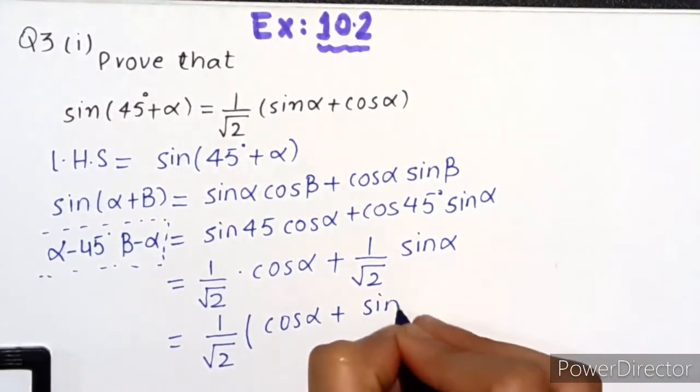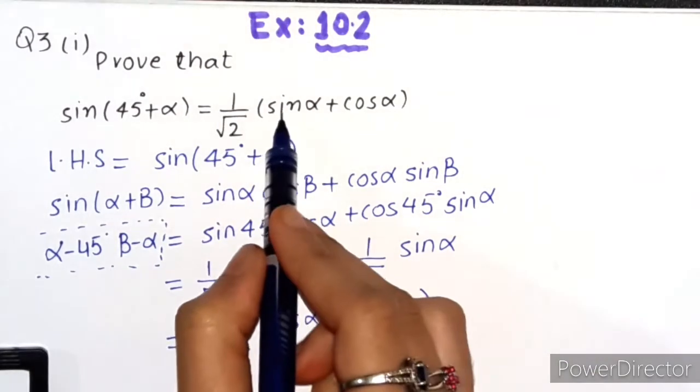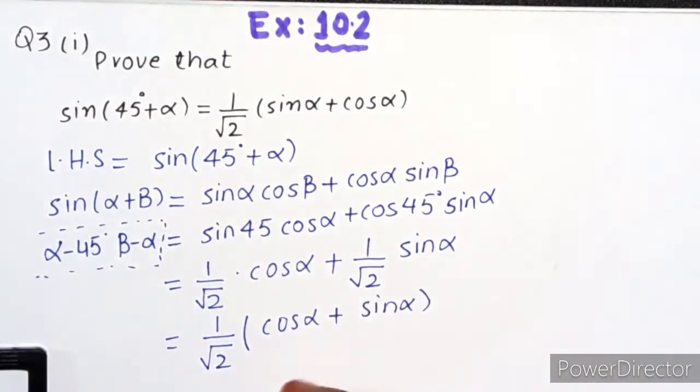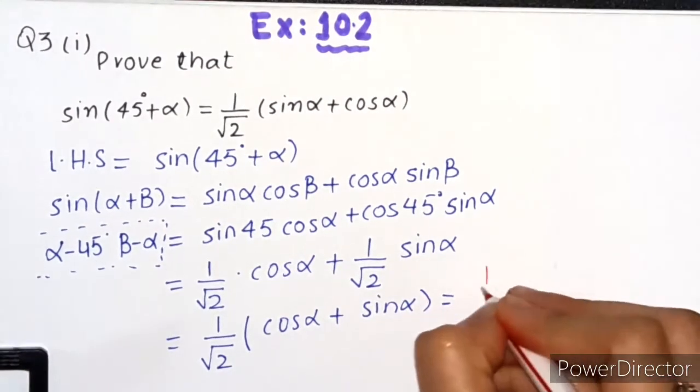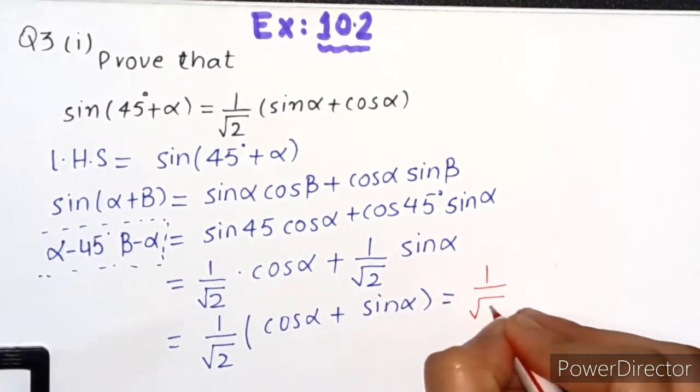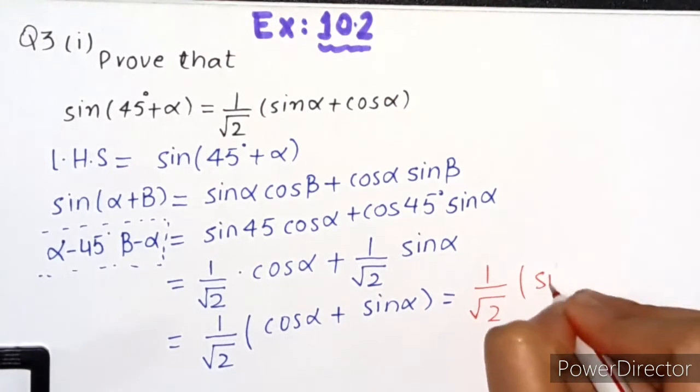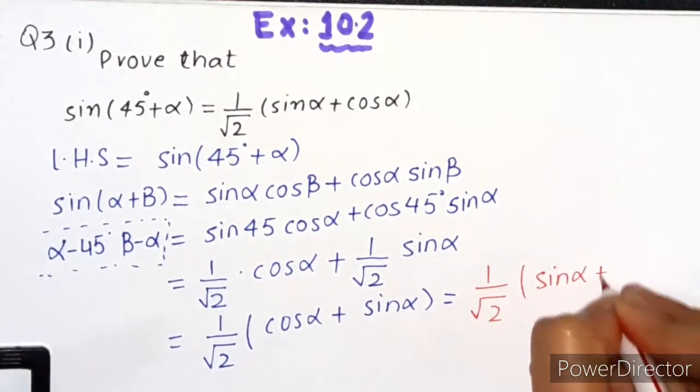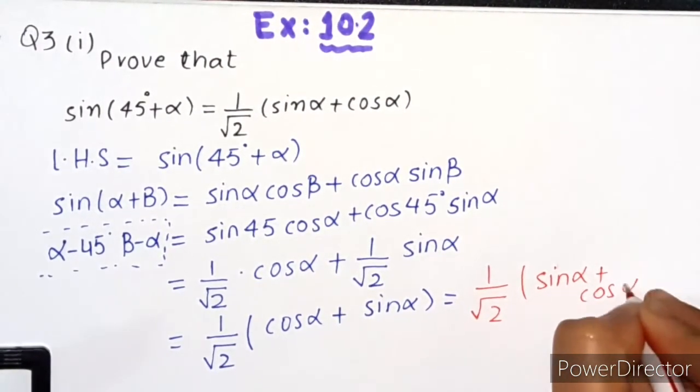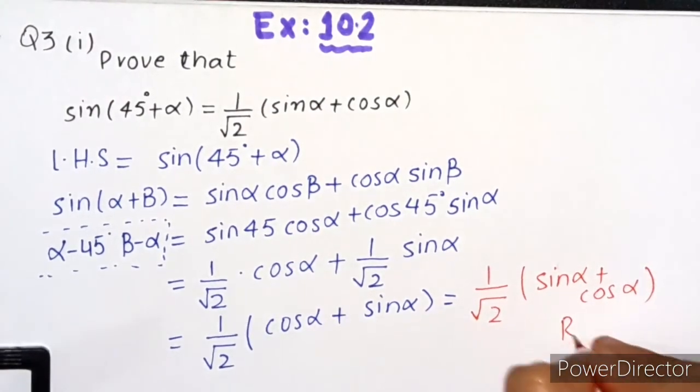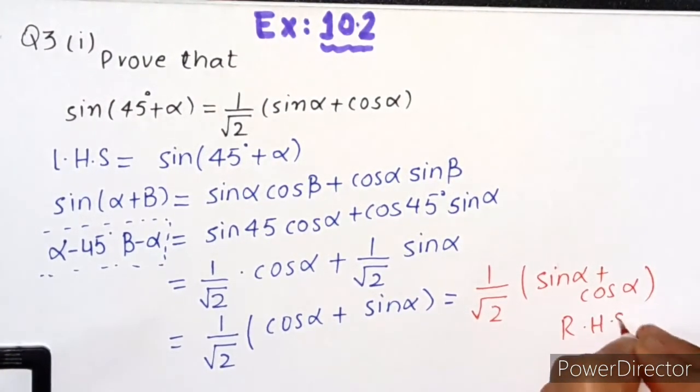Since we need sin first and then cos, we'll rearrange it. So we write 1 over root 2 times (sin α + cos α), which is equal to the right hand side. Proof.